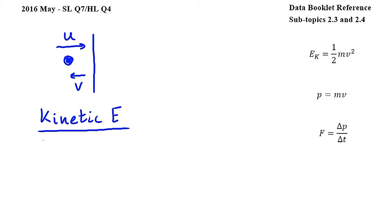In this question a ball hits a wall and rebounds, and we have to find expressions for the average force and the loss of kinetic energy. I have drawn a sketch of the situation here, including U and V.